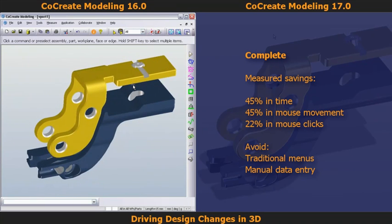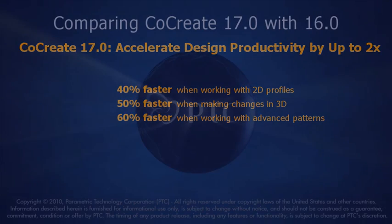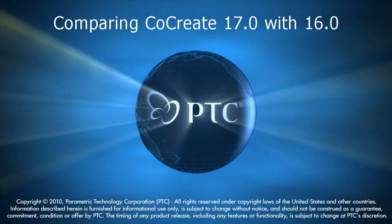Overall, when comparing CoCreate 17 and 16 on a number of key design tasks, the 17 release dramatically increases design productivity — up to 2 times faster than version 16. With CoCreate 17, I've been able to reduce time spent creating 2D profiles by 40%, modify models up to 2 times faster, and reduce the time spent creating and modifying advanced 3D patterns by 60%. Now with the CoCreate 17 release, you should be planning your upgrade and doubling your design productivity. Look out for more sneak peeks and release information in CoCreate News, or visit PTC.com.